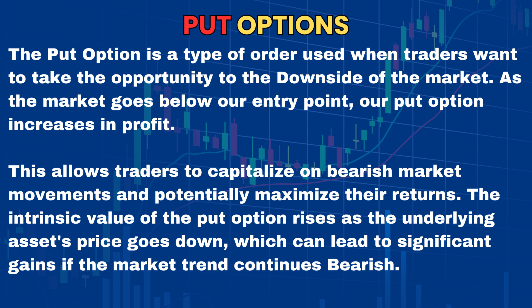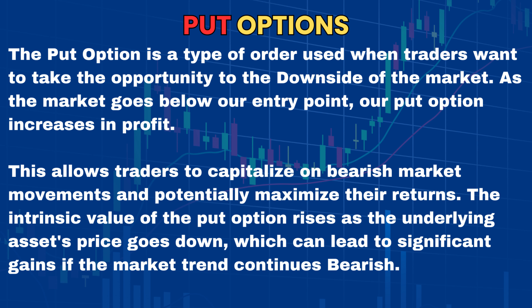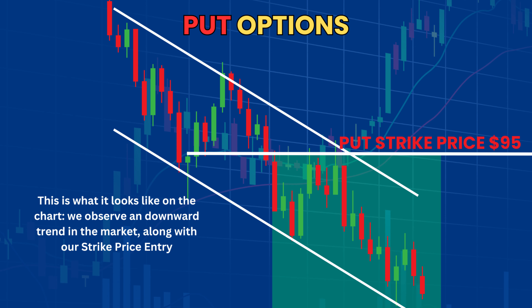The put option is a type of order used when traders want to take opportunity to the downside of the market. As the market goes below our entry point, our put option increases in profit, allowing traders to capitalize on bearish market movements. For example, if a stock is at $100 and you believe it will fall to $80, you buy a put option with a strike price of $95. If the stock goes below $95, your put option increases in value. On the chart, we observe a downward trend alongside our strike price entry.